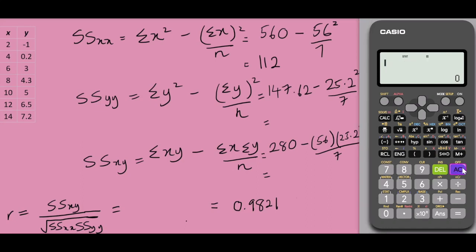Sum of squares of yy: 147.62 minus bracket 25.2 square divided by 7 close bracket equals 56.9. And the sum of squares of xy: 280 minus open bracket 56 multiplied by 25.2 divided by 7 and we have 78.4.